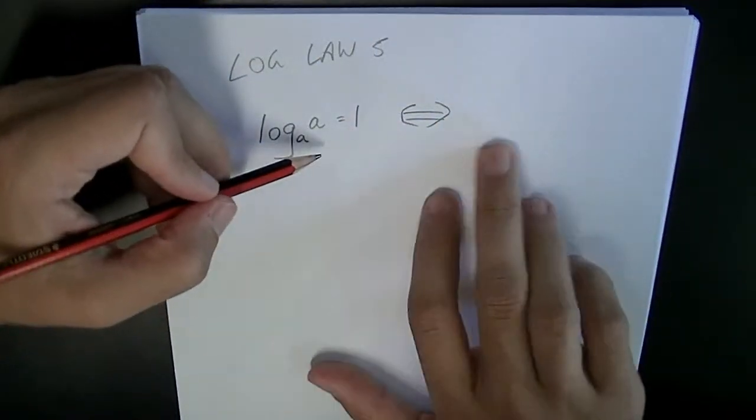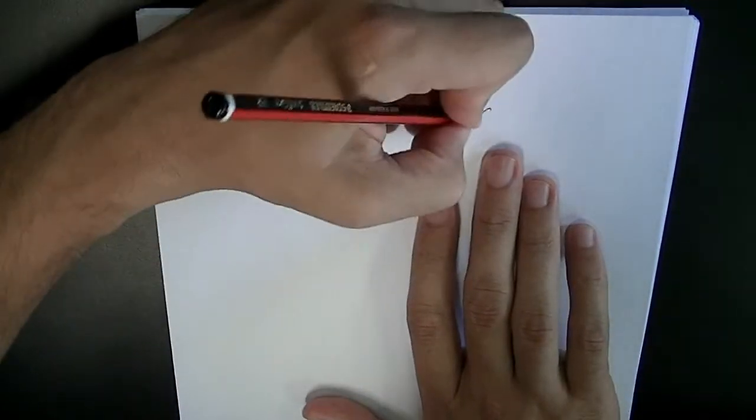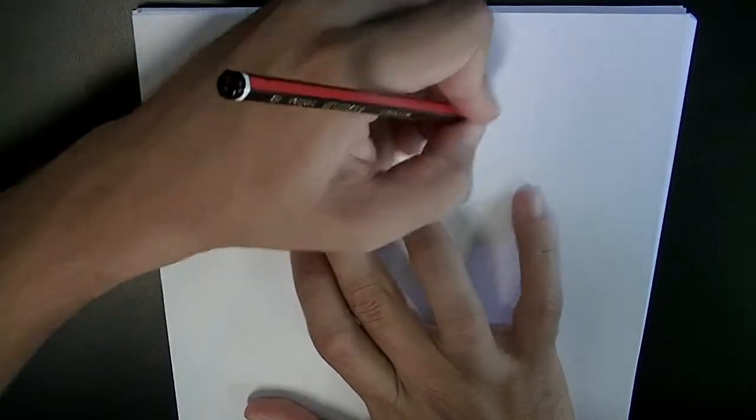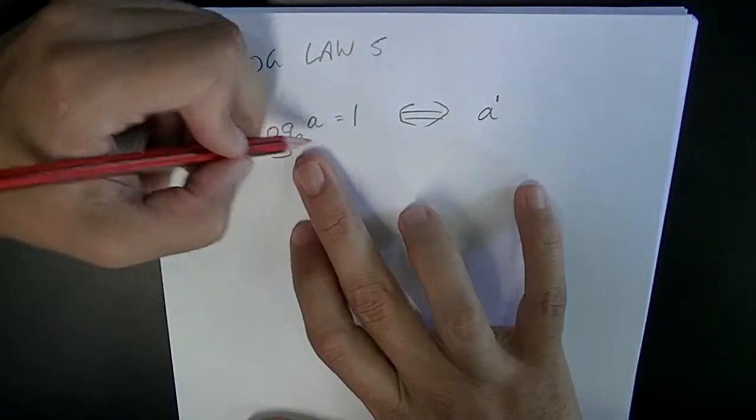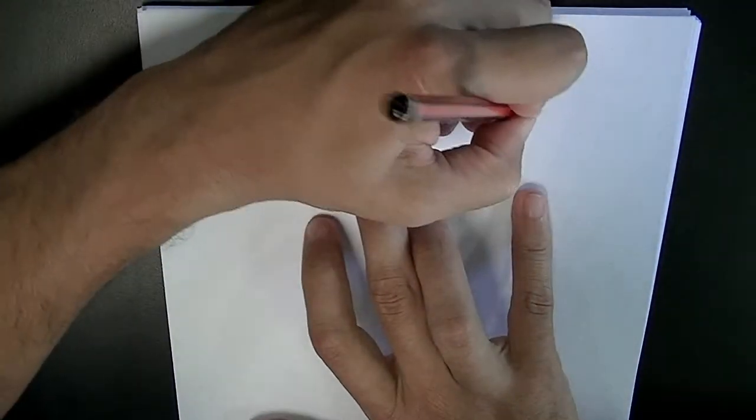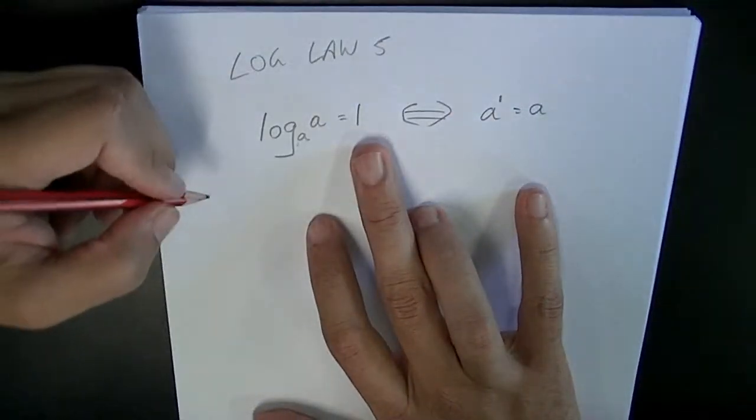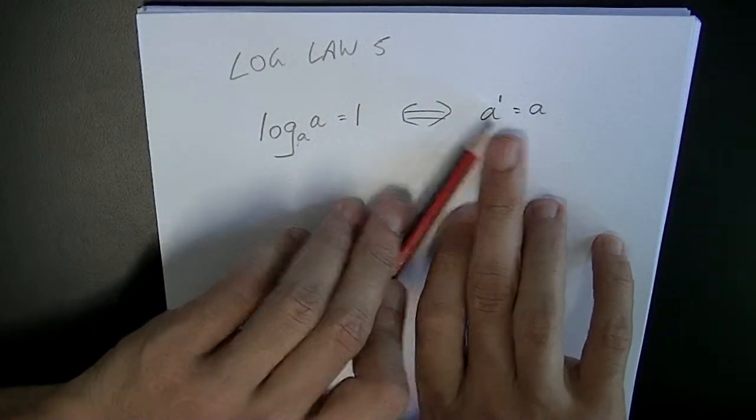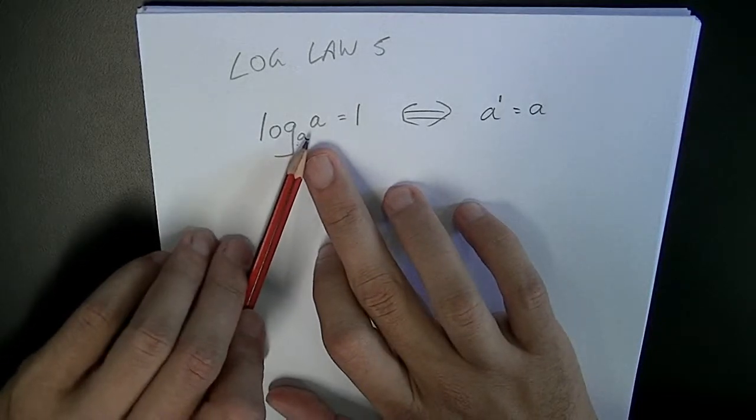You can look at this in exponential form, if you like. A to the power of 1, that's obviously going to be equal to a. So looking at it in exponential form, it's very obvious why this log law works.